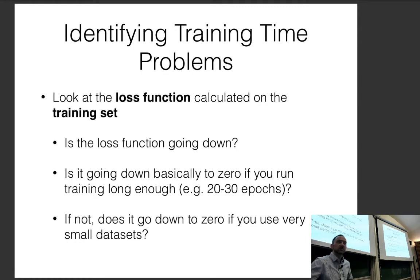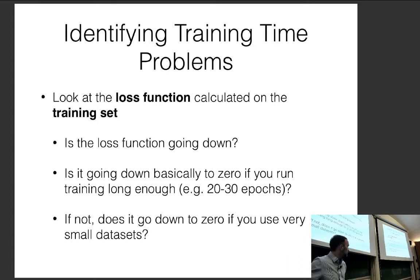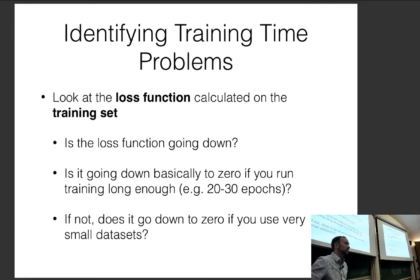If it doesn't go down to zero on real data, does it go down to zero on fake data — super small data where you randomly sampled 10 examples from your training set, or even randomly created data that should look like your real data? You might even start out by doing this first before looking at real data: create a few fake training examples and see whether it works.